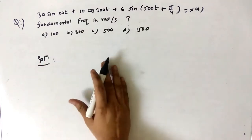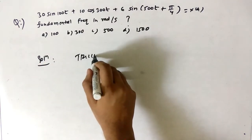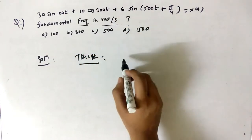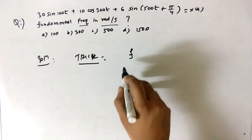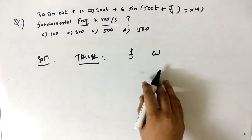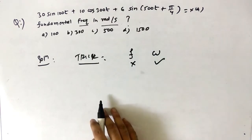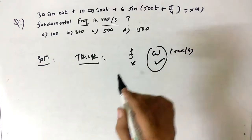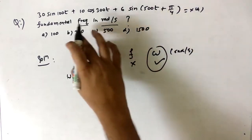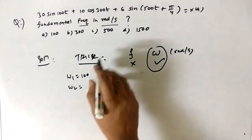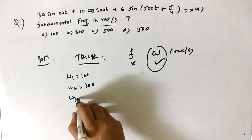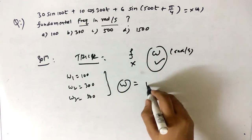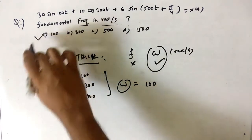You can solve this question orally using a trick. We need to find the fundamental frequency in radians per second — this is ω (omega), the frequency in rad/s. The basic rule is: ω₁ = 100, ω₂ = 300, ω₃ = 500. The fundamental ω is the HCF of these values, so HCF(100, 300, 500) = 100. The answer is 100 rad/s.